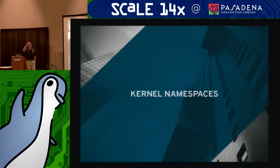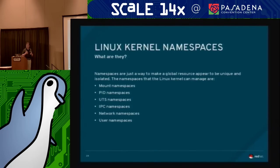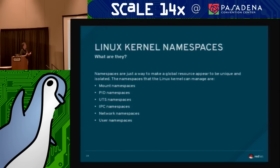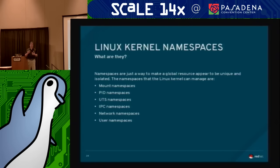I was having conversations about container security and it always came back to kernel namespaces without a clear explanation. Namespaces are just a way to make a global resource appear to be unique and isolated. The namespaces the Linux kernel can manage include: mount namespaces, process ID namespaces, Unix Time Sharing (UTS) namespaces, interprocess communication namespaces, network namespaces, and user namespaces.